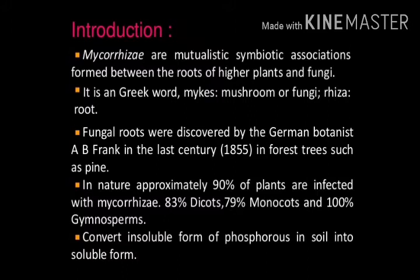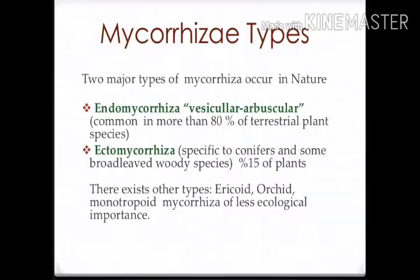Mycorrhiza converts the insoluble form of phosphorus in soil into soluble form, which is why it benefits the environment and is useful for plant productivity and growth. There are two major types: endomycorrhiza, also called vesicular arbuscular mycorrhiza, which is common in more than 80 percent of terrestrial plant species; and ectomycorrhiza, which is specific to conifers and some broad-leaved woody species, covering about 50 percent of plants. Other types like ericoid, orchid, and monotropoid mycorrhiza are of less ecological importance.